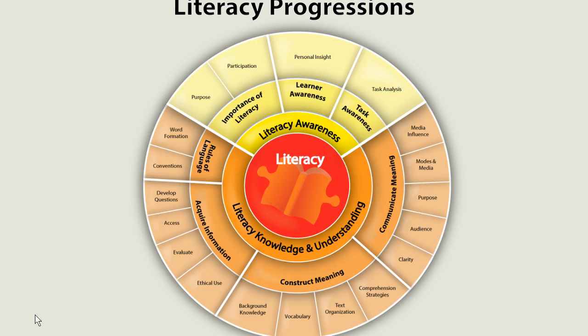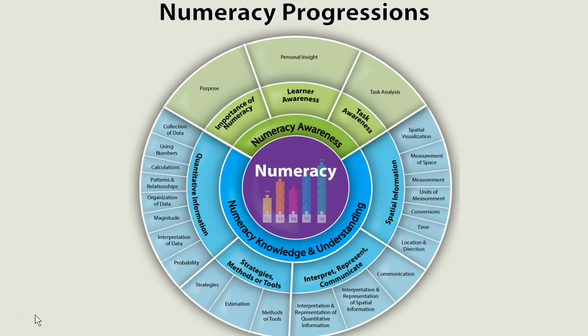This poster is accessible through the additional resources provided in the learning guide. On the inner circle it provides the components of literacy — literacy awareness and literacy knowledge and understanding. The next circle provides the elements that fall within those components, such as importance of literacy and learner awareness. From there it's further broken down into the outer circle, which highlights those descriptor headings. Numeracy is again designed in the same way: components, elements, and descriptor headings.